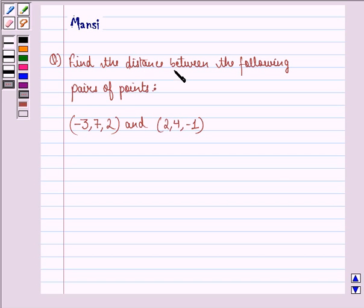The question says, find the distance between the following pairs of points, (-3, 7, 2) and (2, 4, -1).